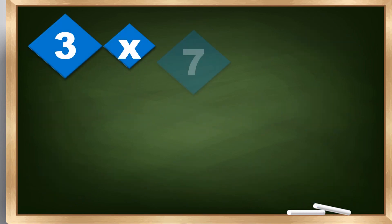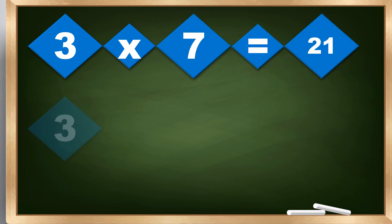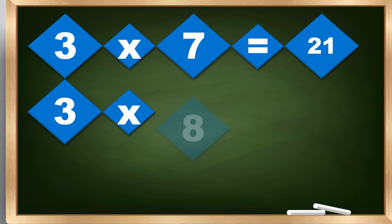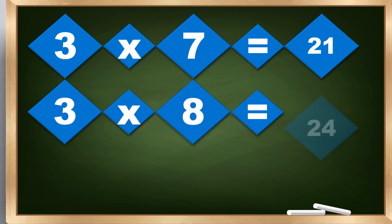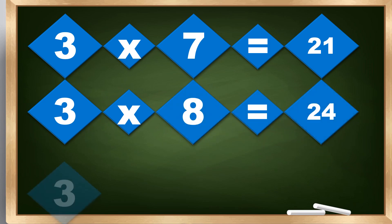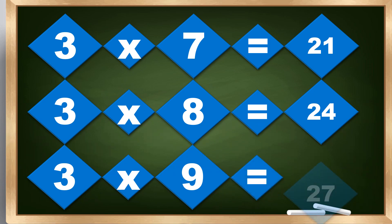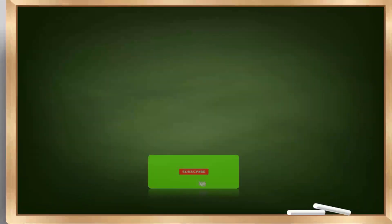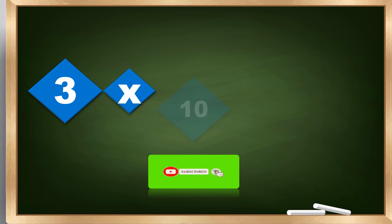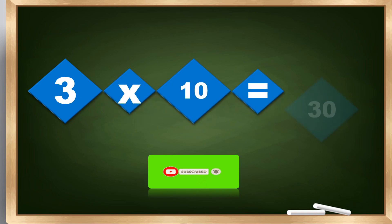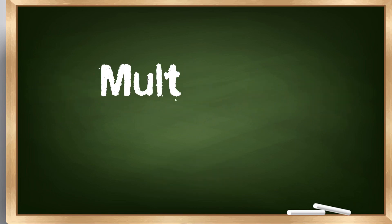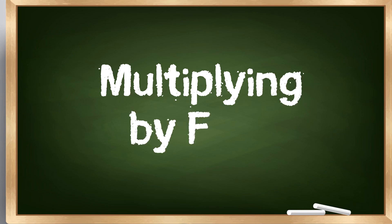3 times 7 equals 21. 3 times 8 equals 24. 3 times 9 equals 27. 3 times 10 equals 30. Multiplying by 4.